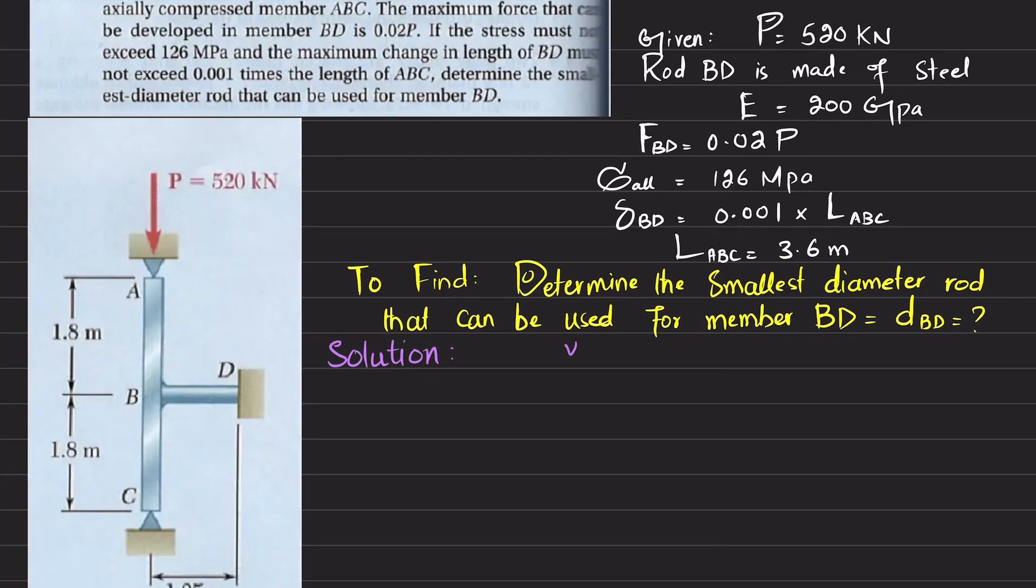First, we know that allowable stress in BD is equal to force in BD divided by area of BD. We will first find force in BD, which is given as 0.02 times P. When you put 0.02 P is 520 kilonewton, so it will give you 10.4 kilonewton. Now, allowable stress is also given, which is 126 megapascal, so 126 into 10 to the power 6.